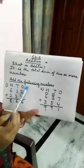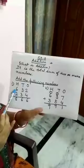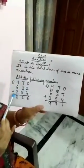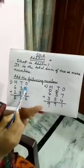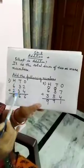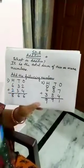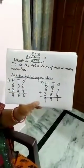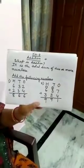Add the following numbers. 632, 234. Now add 2 plus 4, 6. 3 plus 3, 6. 6 plus 2, 8. Did you understand children? Okay.